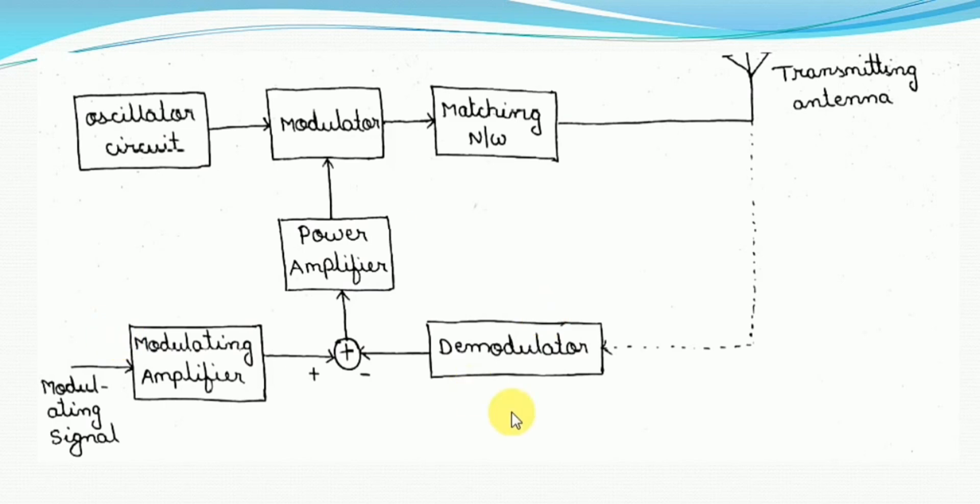By introducing a negative feedback, it simply minimizes the distortion of the modulation envelope and also the output modulation characteristics of class C power amplifier modulator block is also linearized by the negative feedback.